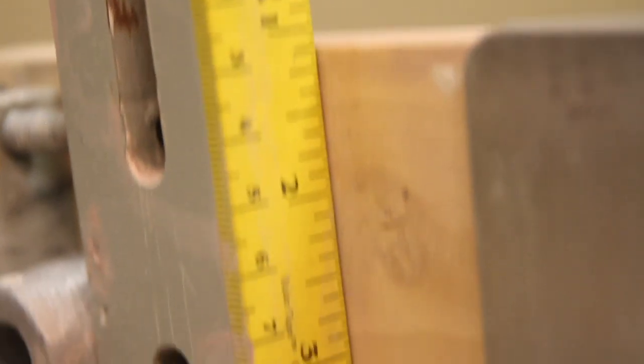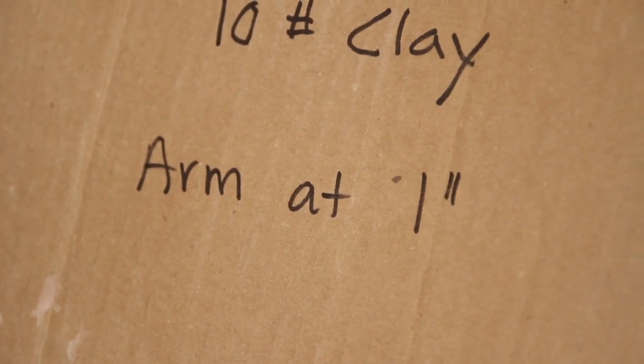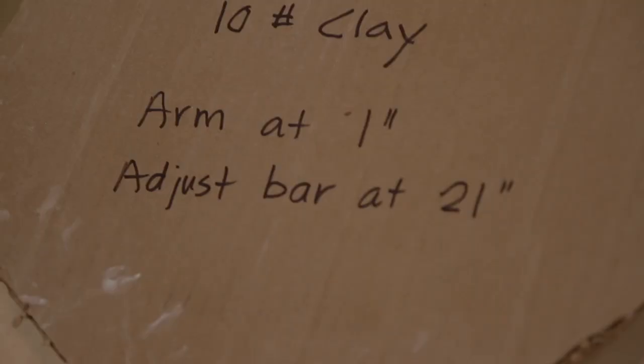By using the measuring tapes located on the power arm and the upright adjusting bar, document on your template the setting for your profile tool and adjusting bar.